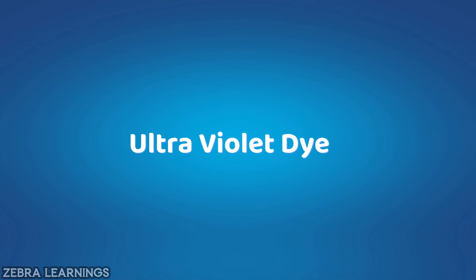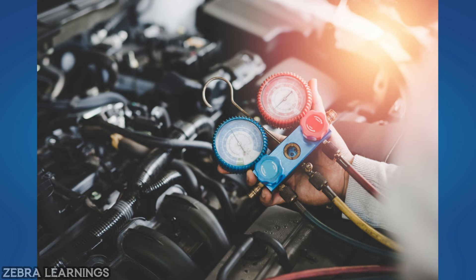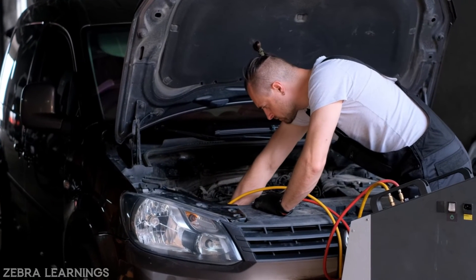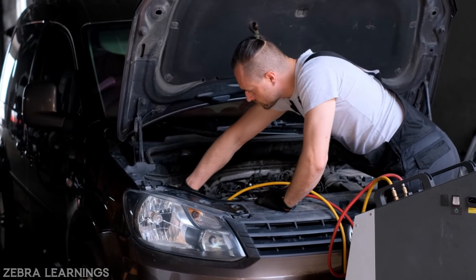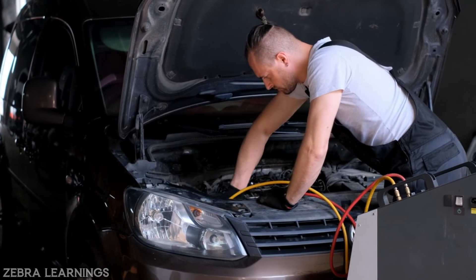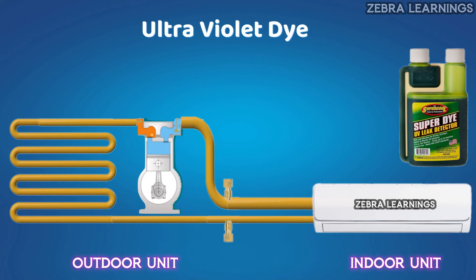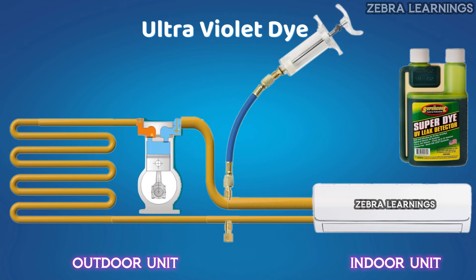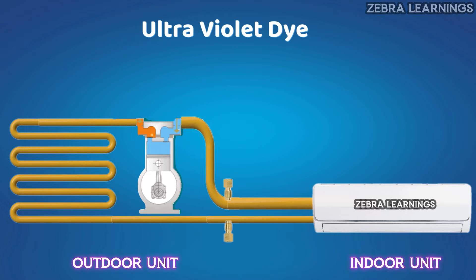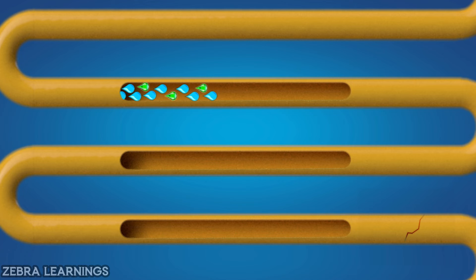Next, let's see how to find a leak using ultraviolet dye. The UV dye method is mostly used for leak checking in car ACs, since the AC in a car is very small and we cannot see all the parts easily. When checking using UV dye, charge the UV dye inside the unit through the service valve. After charging the required amount, turn on the unit. When the unit is running, the UV dye travels throughout the unit along with the refrigerant.